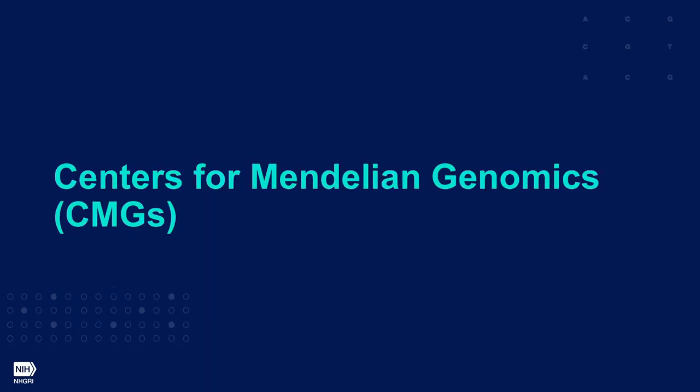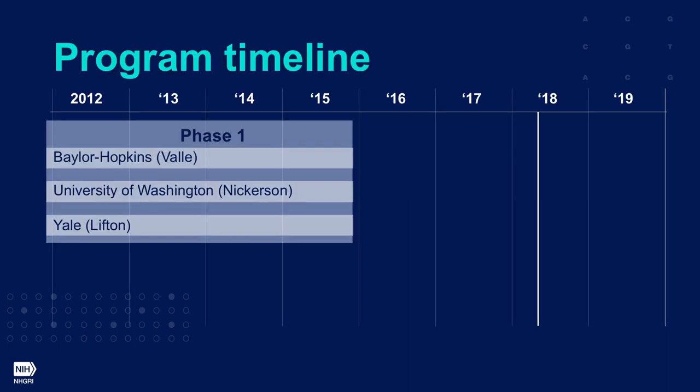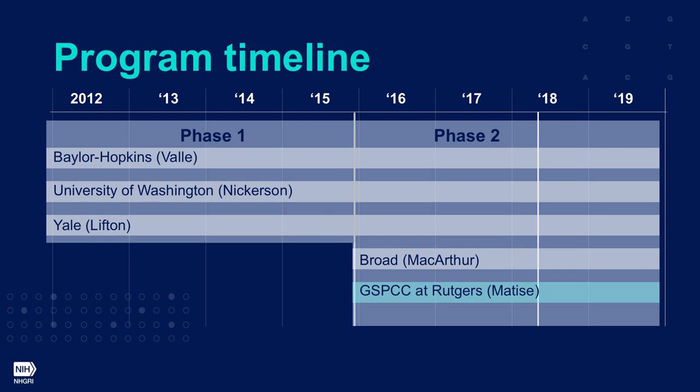Thank you, Adam. I'll give a brief update on progress from the CMGs. We are currently in the second iteration of the program. The first phase was funded in late 2011 with three centers — one at Baylor/Hopkins, one at the University of Washington, and one at Yale. All three successfully re-competed for phase two, and we were able to add a fourth at the Broad. The Coordinating Center has been instrumental in the second phase since they came online.